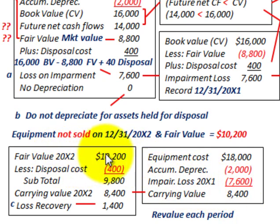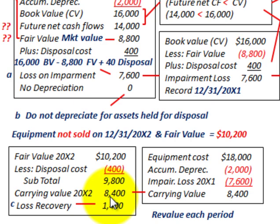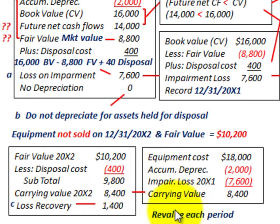We take the fair value at 20x2 of $10,200 and subtract our disposal cost of $400, giving a subtotal of $9,800. Comparing our carrying value of $8,400 to the fair value less disposal cost of $9,800, we see that we have a recovery of $1,400. Since the carrying value is less than the fair value less disposal cost, we have a loss recovery. We re-evaluate this asset each period.